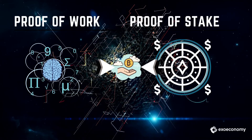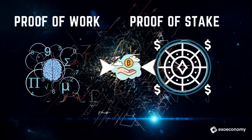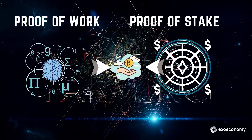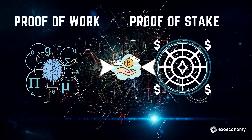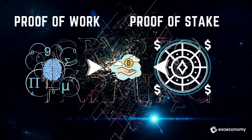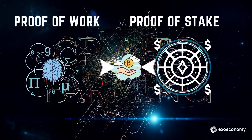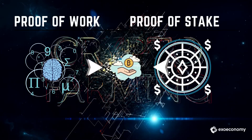Proof-of-work relies on finding an answer to a difficult mathematical problem. Once the problem is solved, the miner is rewarded in cryptocurrency. This creates a new block and secures the blockchain.